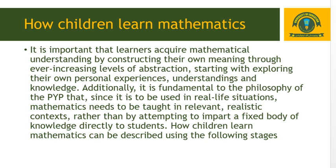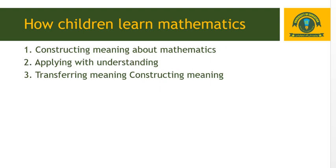How children learn mathematics can be described using three stages: first, constructing meaning about mathematics; second, transferring meaning into symbols; and third, applying with understanding.